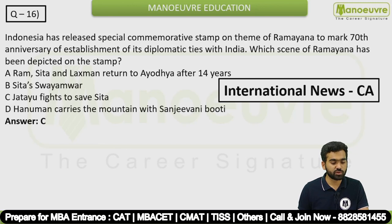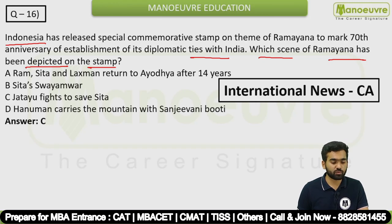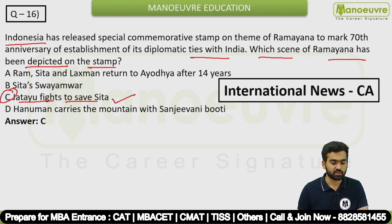Question 16: Indonesia released a special commemorative stamp on the theme of Ramayana to mark the 17th anniversary of establishing diplomatic ties with India. Which scene of Ramayana is depicted on that stamp? The answer is option C — Jatayu's fight to save Sita. This is an international news current affairs question.